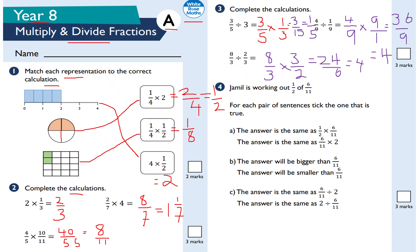Question number 4: Jamil is working out a half of 6 elevenths. 'Of' means multiply. For each pair of sentences, tick the one that is true. Part A: the answer is the same as half times 6 elevenths — that is true. The other is not true, because multiplying by 2 is not the same as multiplying by a half. Part B: the answer will be bigger than 6 elevenths — that's not true; if you multiply by a half, the answer gets smaller, so the second statement is true. Part C: the answer is the same as 6 elevenths divided by 2 — that is true, because multiplying by a half is the same as dividing by 2. You're multiplying by the reciprocal of 2, which equals a half.